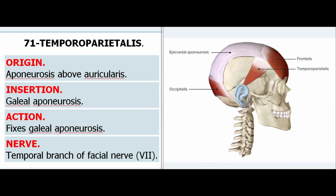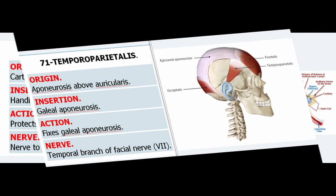71. Temporoparietalis. Origin: Aponeurosis above auricularis. Insertion: Galeal aponeurosis. Action: Fixes galeal aponeurosis. Nerve: Temporal branch of facial nerve (VII).